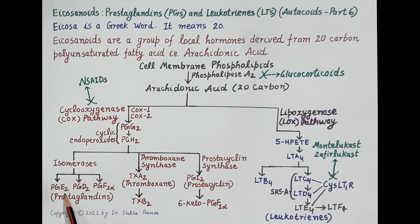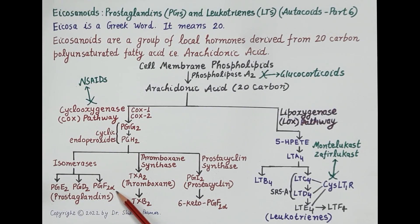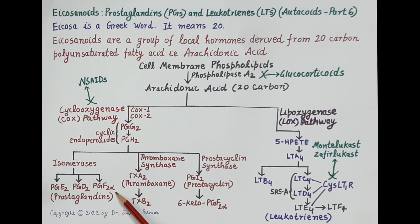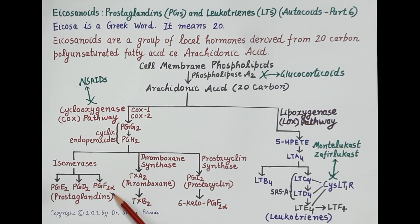PGE2 induces uterine contractions, increases renal blood flow by causing renal vasodilation, and in semen it increases sperm motility. Prostaglandin F2α is a vasoconstrictor that constricts larger blood vessels like pulmonary arteries and veins, and also causes uterine contraction and bronchoconstriction.